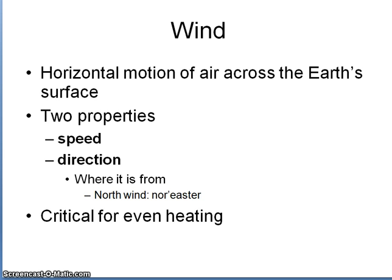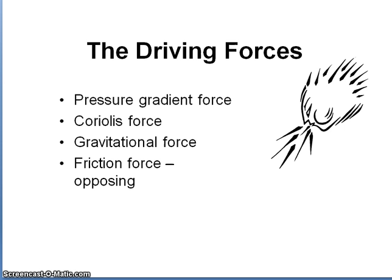When we talk about the movement of air across the Earth's surface, we're looking at two properties: speed and direction. When we name a wind, we name it from the direction it's blowing from, not to. So a nor'easter would be from the northeast, a nor'wester from the northwest, and a westerly wind from the west.